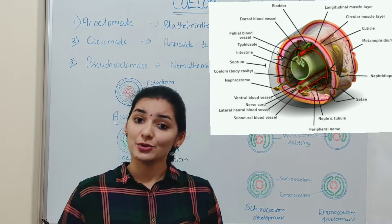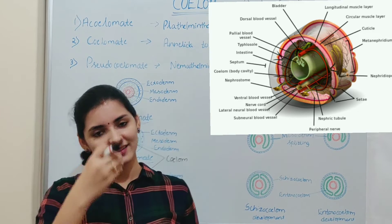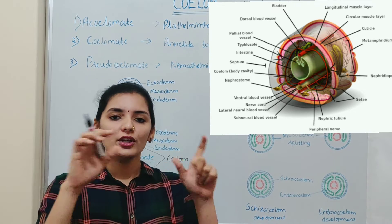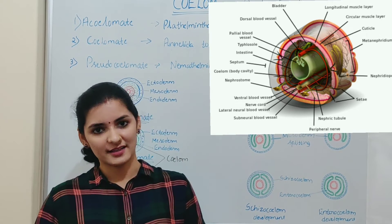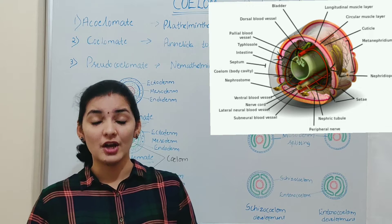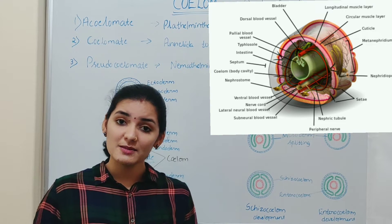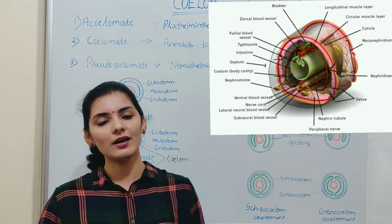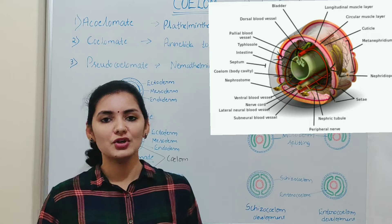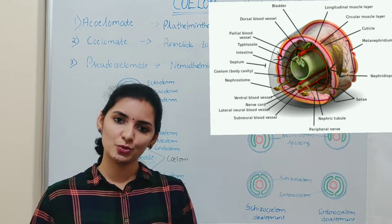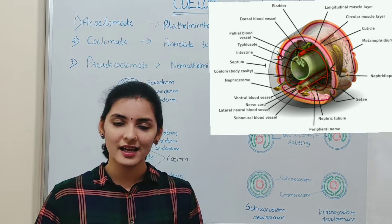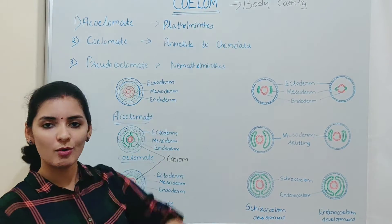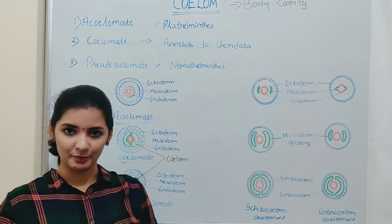As you know, the digestive tube is present at the center of the body and the body wall is present at the periphery. So whatever space is present between the peripheral body wall and the central digestive tube or gut is known as Body Cavity or Body Coelom.